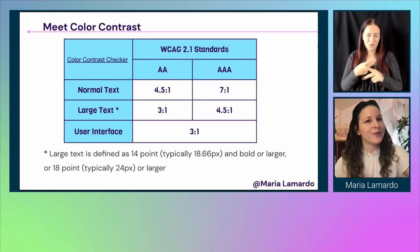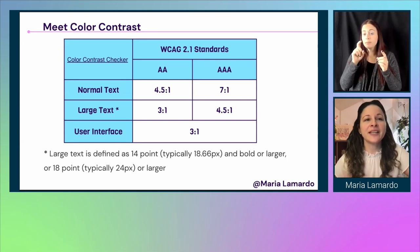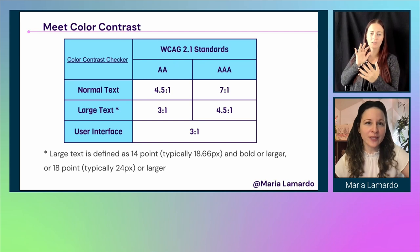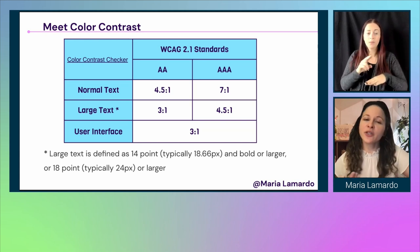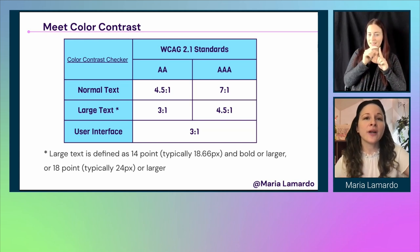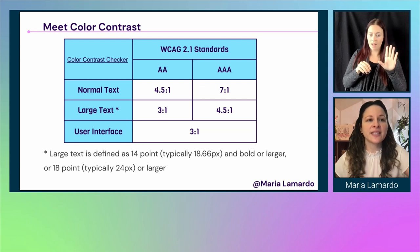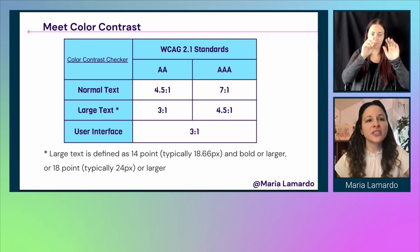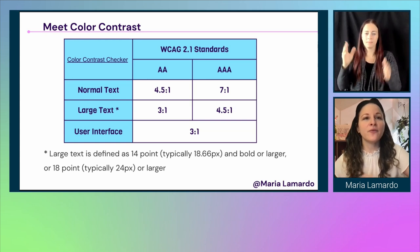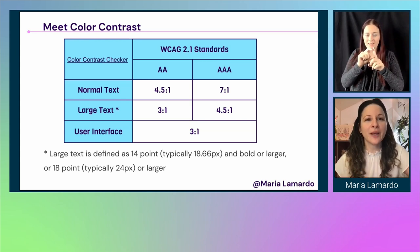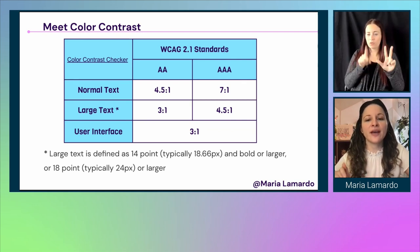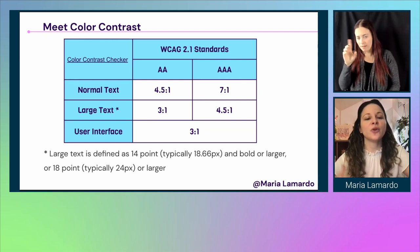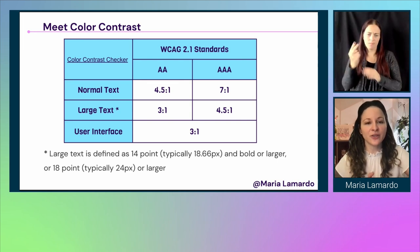Like with any application, we want to make sure we're meeting color contrast. Here I've created a table showing all the WCAG 2.1 standards. For normal text, your color contrast should be 4.5 to 1 to meet AA standards, and 7 to 1 to meet AAA. For large text — defined as 14pt bold or larger, or 18pt or larger — contrast should be 3 to 1 for AA and 4.5 to 1 for AAA. All user interface components should meet a 3 to 1 ratio.